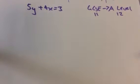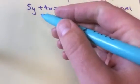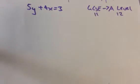And here we're going to do some coordinate geometry. So we've been asked to find the gradient of this line, 5y plus 4x equal to 3.